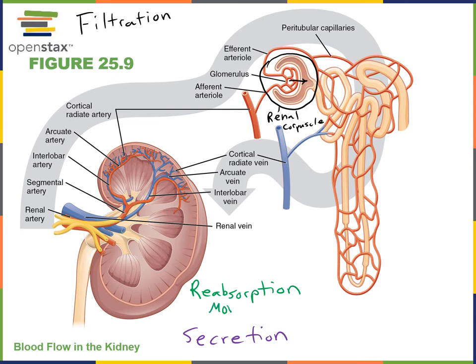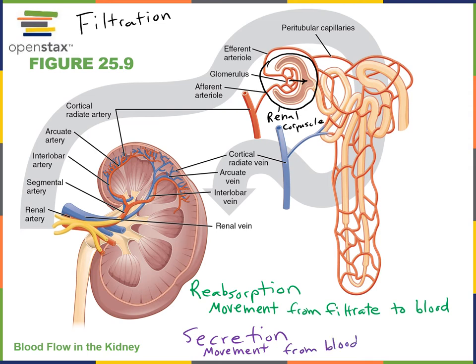Reabsorption is movement from the filtrate to the blood. In contrast, secretion is the opposite — secretion is movement from the blood to the filtrate. Reabsorption is important to reclaim the majority of water and essential nutrients that we don't want to lose in the urine. In contrast, secretion is a mechanism to help remove waste from the body, secreting that waste from the blood into the urine.